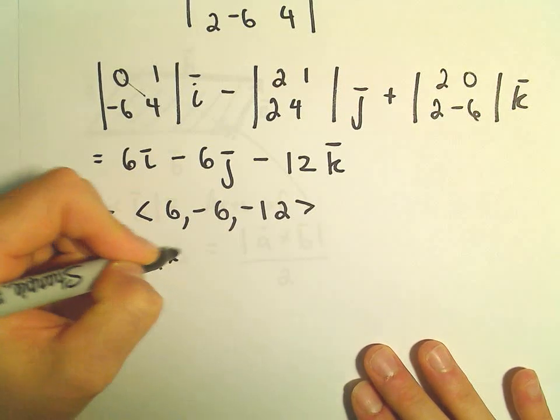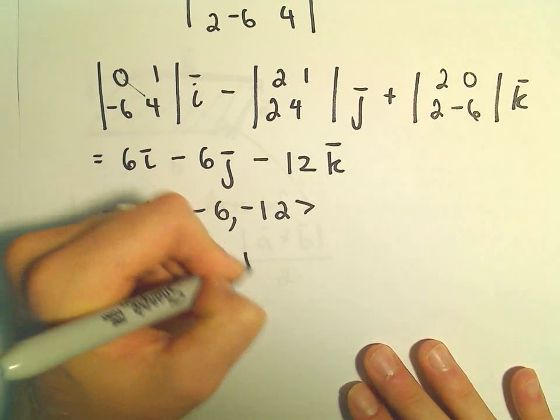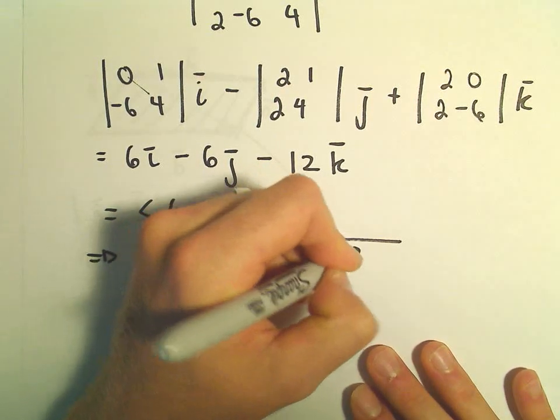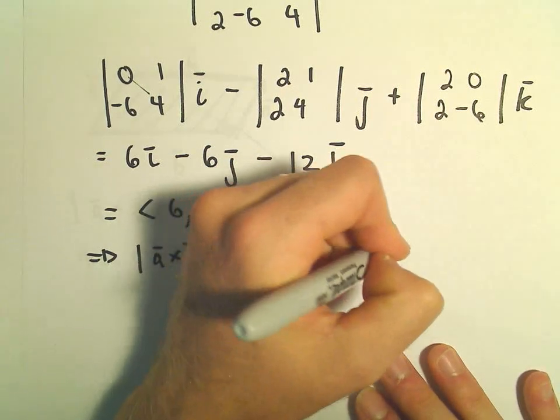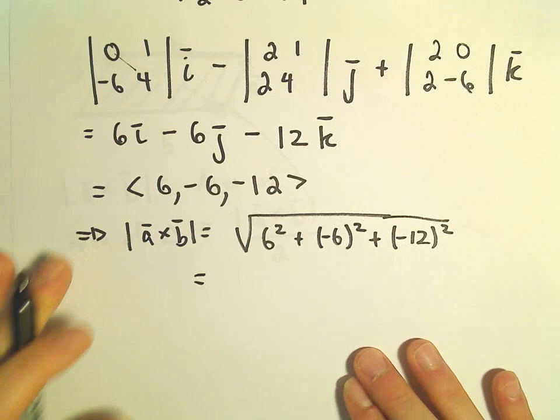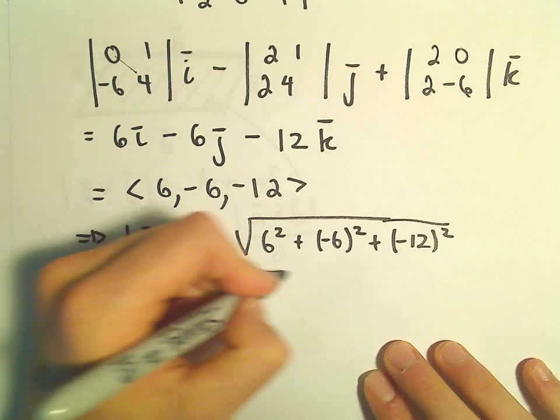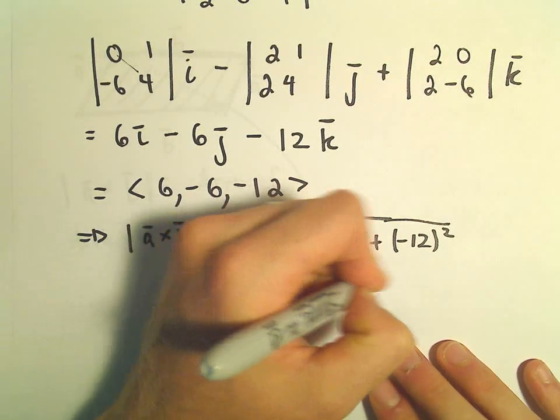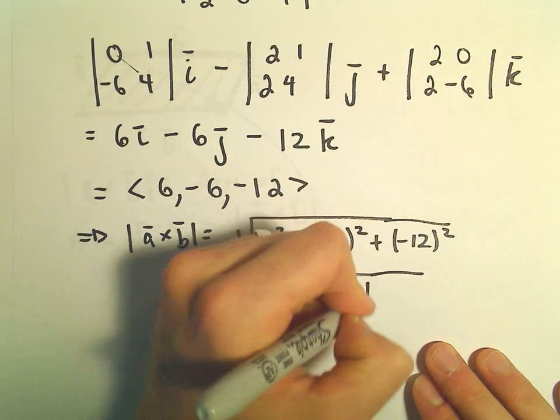So that says the magnitude of A cross B. Well, that's going to be 6 squared plus negative 6 squared plus negative 12 squared. Well, let's see. 6 squared is 36. Negative 6 squared is also 36. Negative 12 squared will be 144.